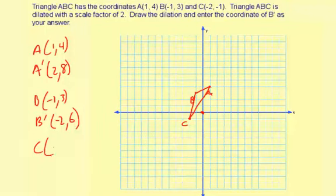And C, that has a value of negative 2, negative 1, C' is going to be, that's right, negative 4, negative 2.